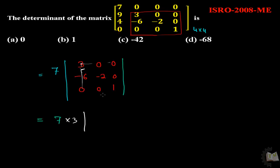7 into 3 whole into minus 2, 0, 0, 1. And its value will be 7 into 3 into minus 2 into 1, equal to minus 42.